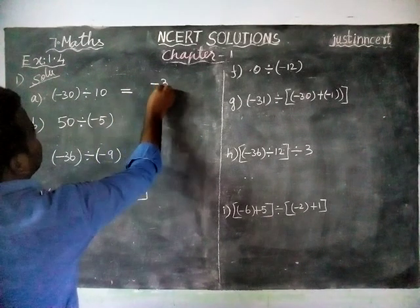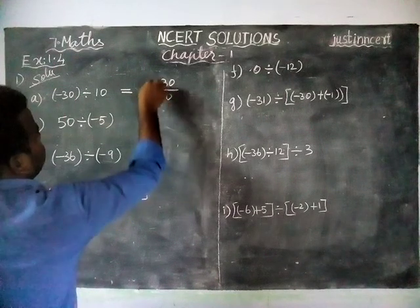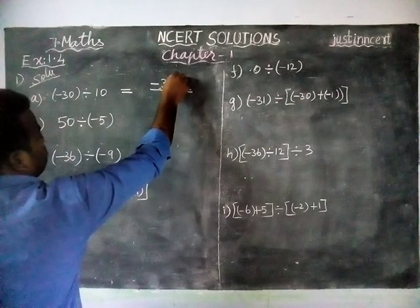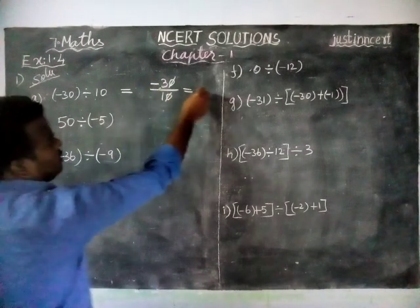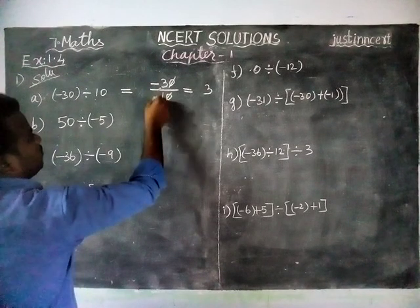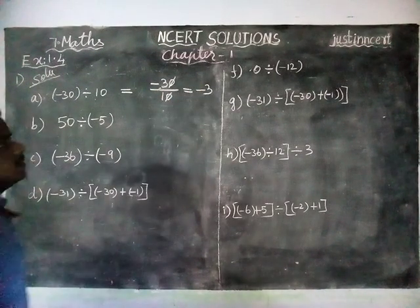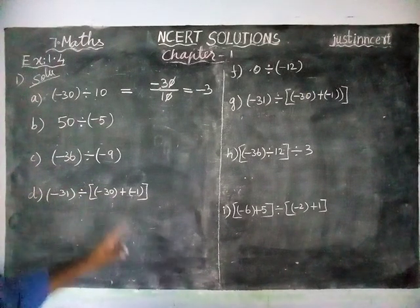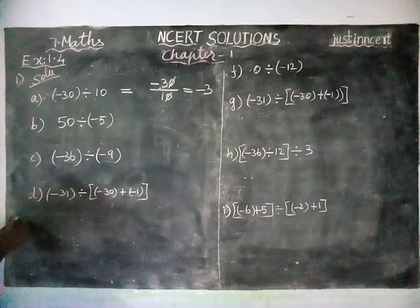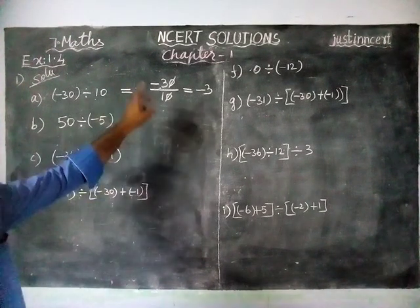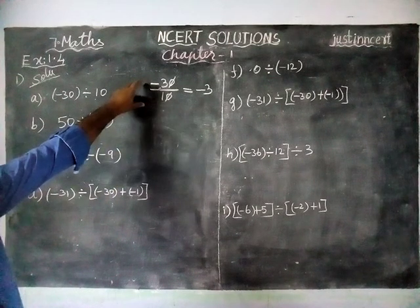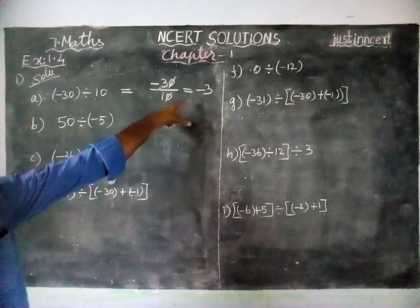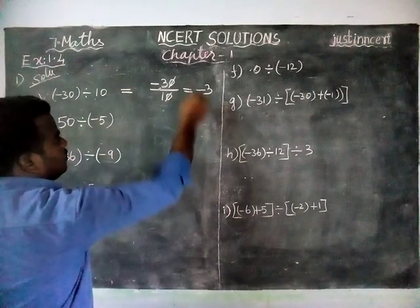When we are dividing 30 by 10, and minus divided by plus number, we are getting minus answer. The zeros get cancelled, remaining is 3. When we are dividing a minus number by a plus number, we get minus. The same rule applied in multiplication also applies here: when we are multiplying or dividing two same signs, we get plus answer; when we are dividing different signs, we will get minus answer. So this is a different sign, we are getting minus 3 as the answer.